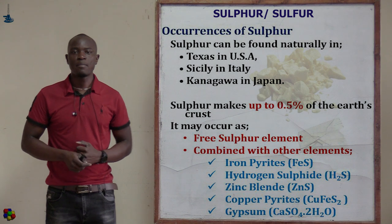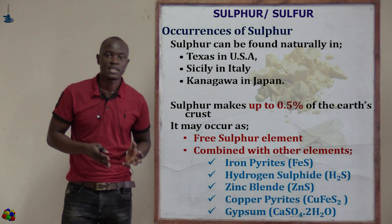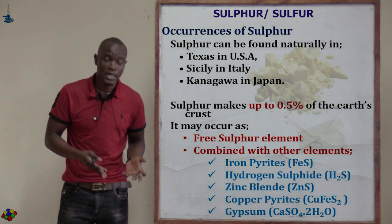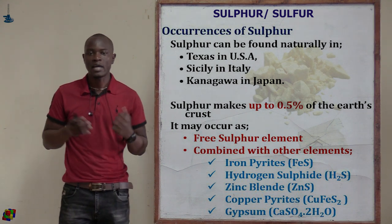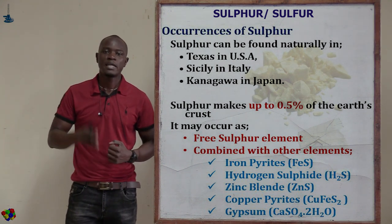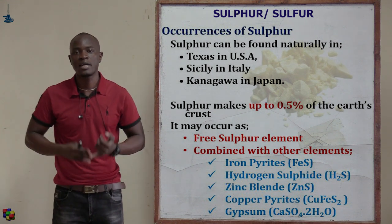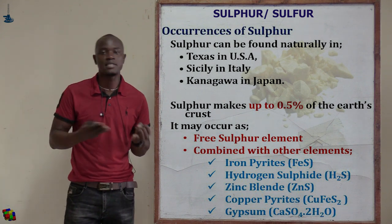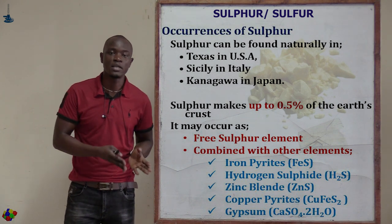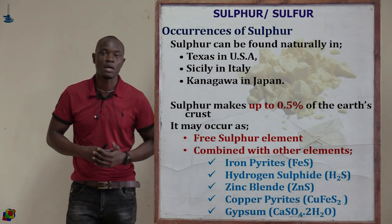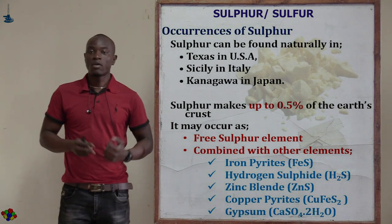Sulfur mainly occurs deposited in different areas: Texas and Louisiana in the United States, Sicily in Italy, and Kanagawa in Japan.